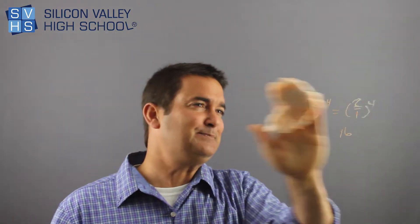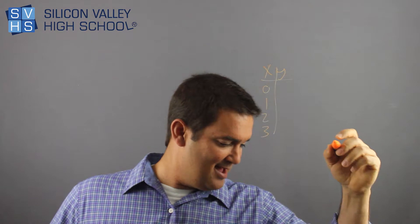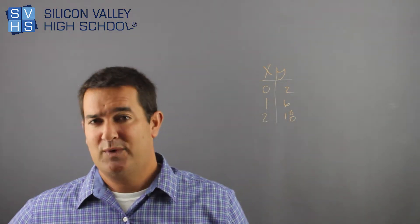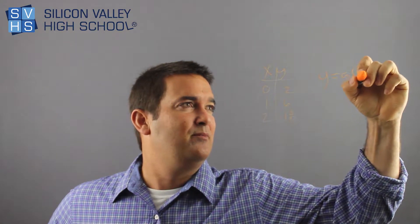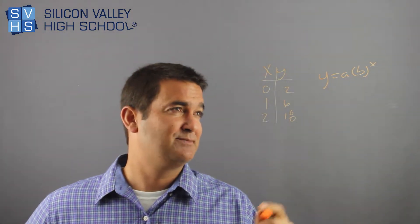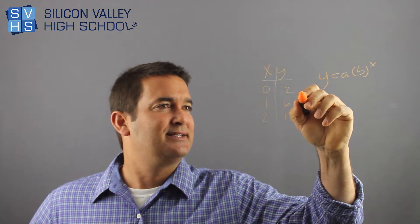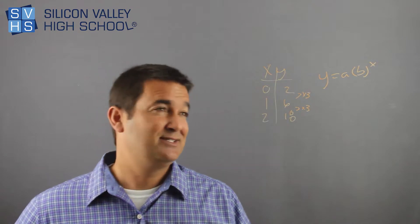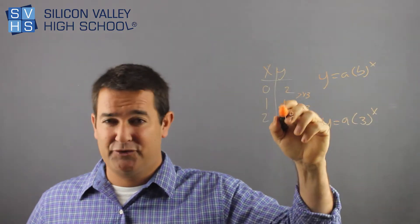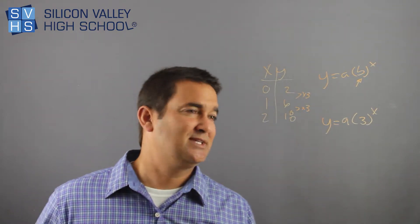What if they gave you a table of values and said: from this table, find the actual equation for the exponential function? Let's say the table has x values 0, 1, 2 and y values 2, 6, 18. I know every exponential equation is y = a · b^x. I don't know what a and b are yet, but that's the generic formula. Since the y-values are multiplied by 3 each time, I know my constant of growth is 3. So at least I know b: y = a · 3^x. Whatever is being multiplied every time goes in for b.